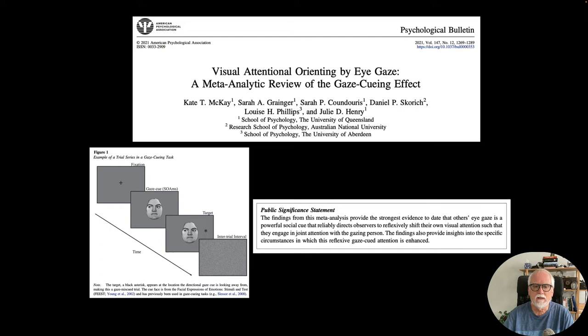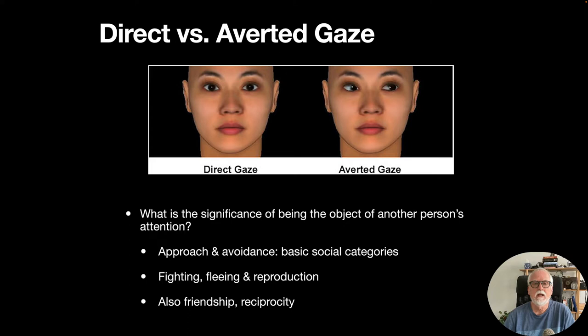In those eye gaze studies, a participant pays attention to a fixation cross on screen, then a face is presented with eyes looking left or right, and then a target appears. The question is: does where that person is looking affect your subsequent attention? Of course it does, and this research shows exactly how it works. When we see someone's eyes looking to the left or right, or looking directly at us, that's the notion of direct versus averted gaze.